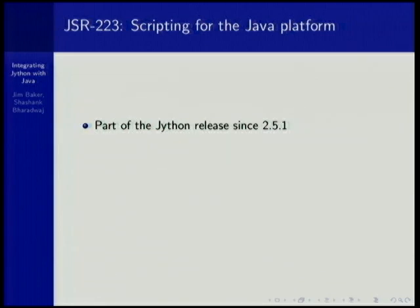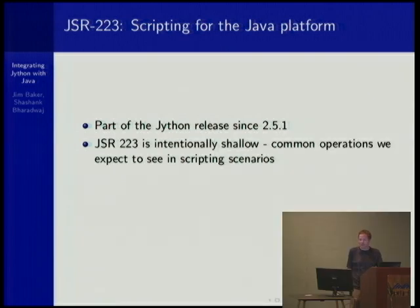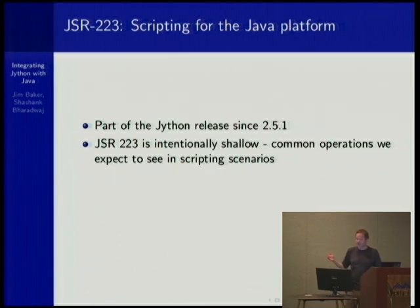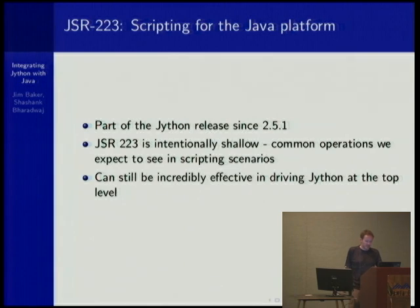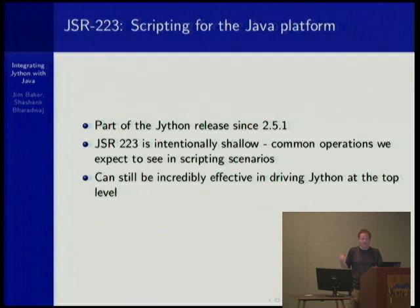Another integration you can choose is JSR-223. It's been part of the release since 2.5.1, although 2.5.2 was really when it became truly usable. It's intentionally shallow, but it has been very popular with integrations like tools such as Mule ESB, because it can be quite effective at driving Jython at the top level.